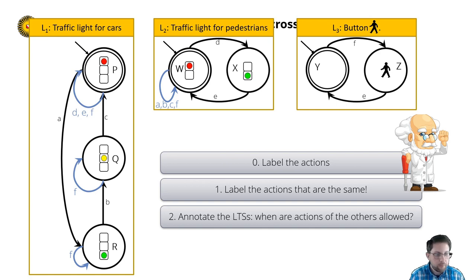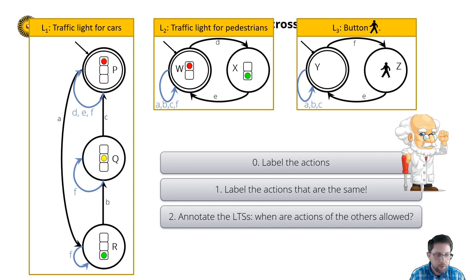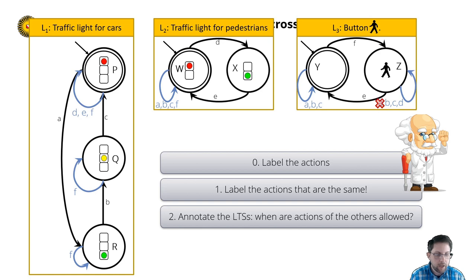For the button system, if the button is not pushed, the car's light may cycle but the pedestrian's light may not. So we add actions A, B, C there. Last, if the button is pushed, we allow the car's light to cycle and let the pedestrian light turn green — hence actions A, B, C and D are allowed. However, we don't want the cars to get green if the button is pushed, so we remove action A from state Z.